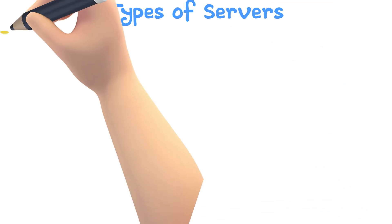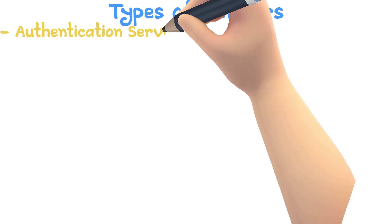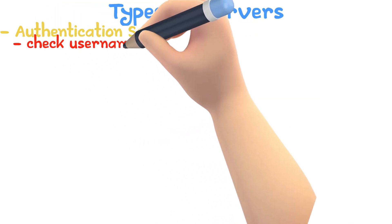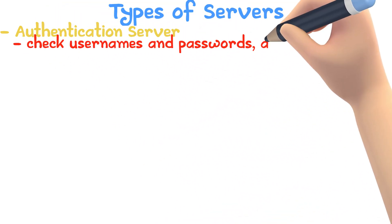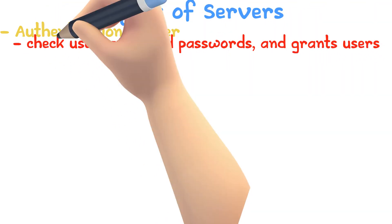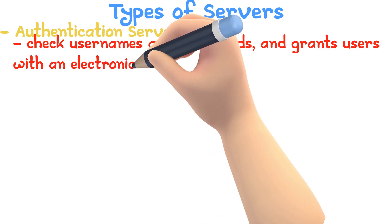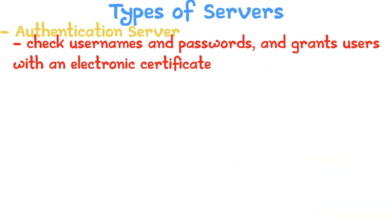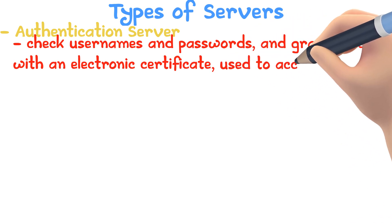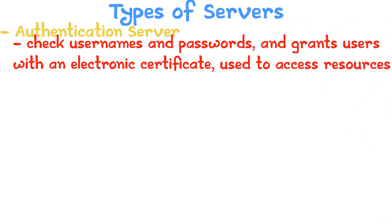Types of servers. Authentication server: checks usernames and passwords and grants clients an electronic certificate if successfully logged in. The e-certificate can be used to access resources like storage or printers.